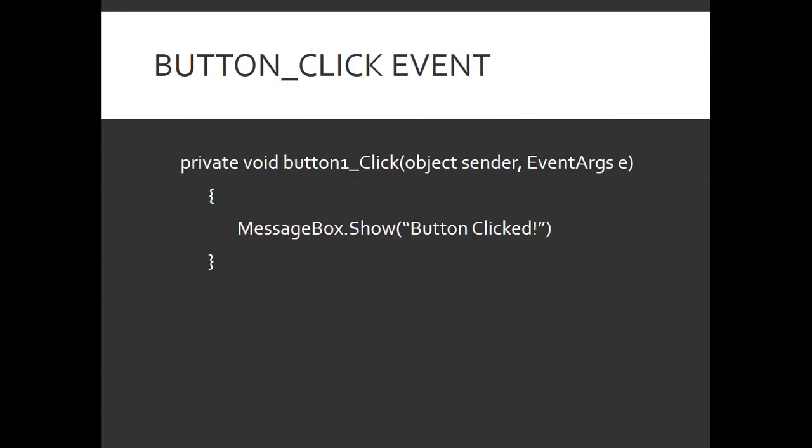Now let us see how to access a click event. Here is an example: private void button_click. We are going to pass two objects to it — the first one is sender and the second one is e.